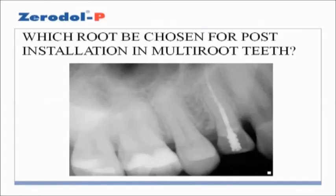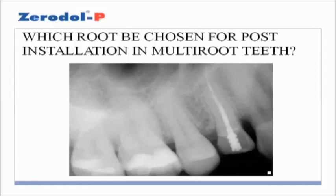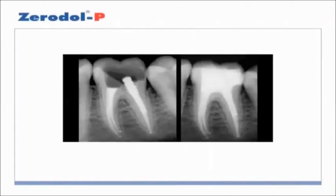Which root should be chosen for post installation in multi-rooted teeth? Always select the longest, straightest root with the greatest circumferential diameter to place the post. Secondly, select the root that reduces the possibility of lateral or apical perforation and which root better distributes the stress due to occlusal loading, such as the distal root of mandibular molars or the palatal root of maxillary molars. In situations of mesial mandibular or buccal maxillary roots, always use a short post. In areas of the root where the greatest amount of coronal tooth structure has been lost, adding a pin is better.